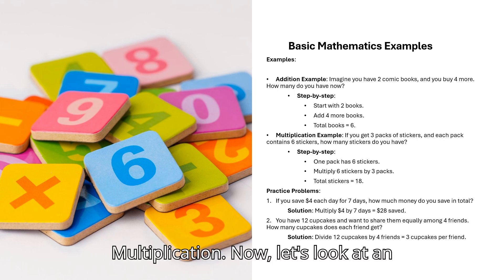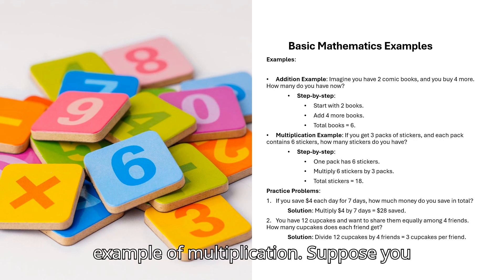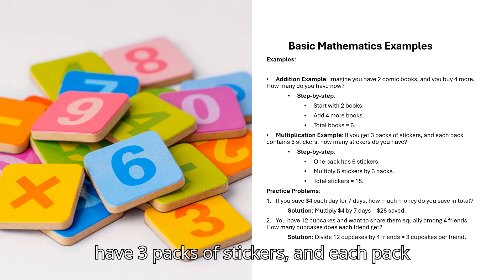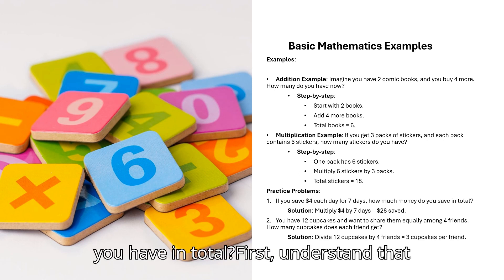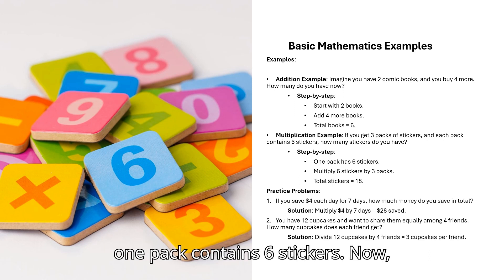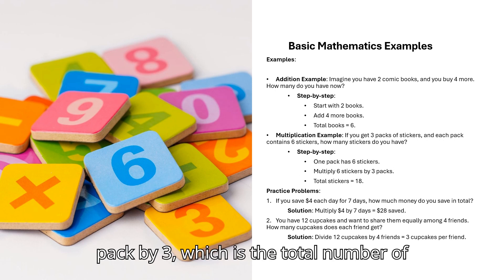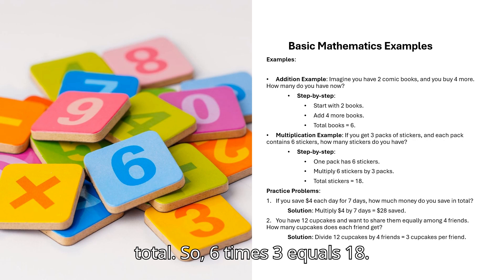Example 2: Multiplication. Now, let's look at an example of multiplication. Suppose you have 3 packs of stickers, and each pack contains 6 stickers. How many stickers do you have in total? First, understand that 1 pack contains 6 stickers. Now, multiply the number of stickers in 1 pack by 3, which is the total number of packs. The result is 18 stickers in total. So, 6 times 3 equals 18.